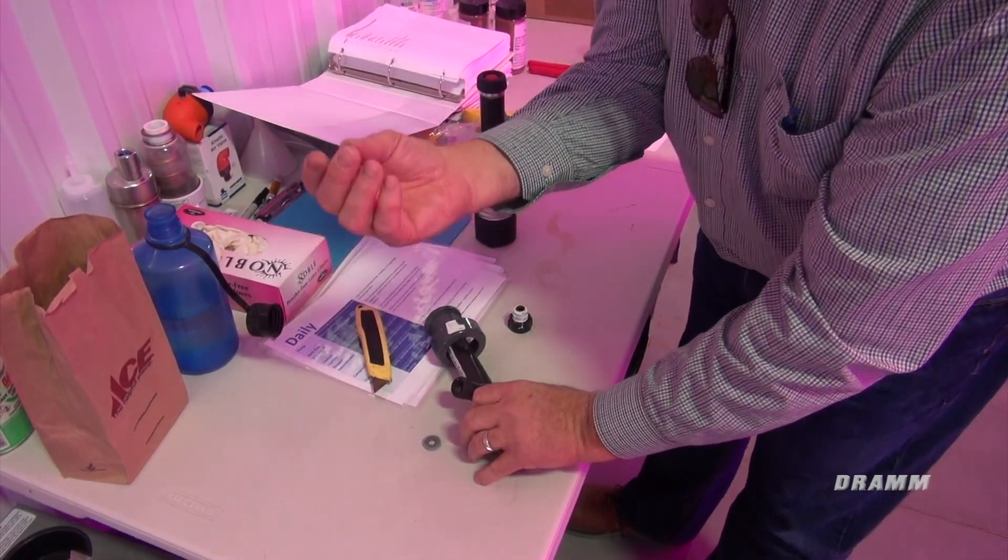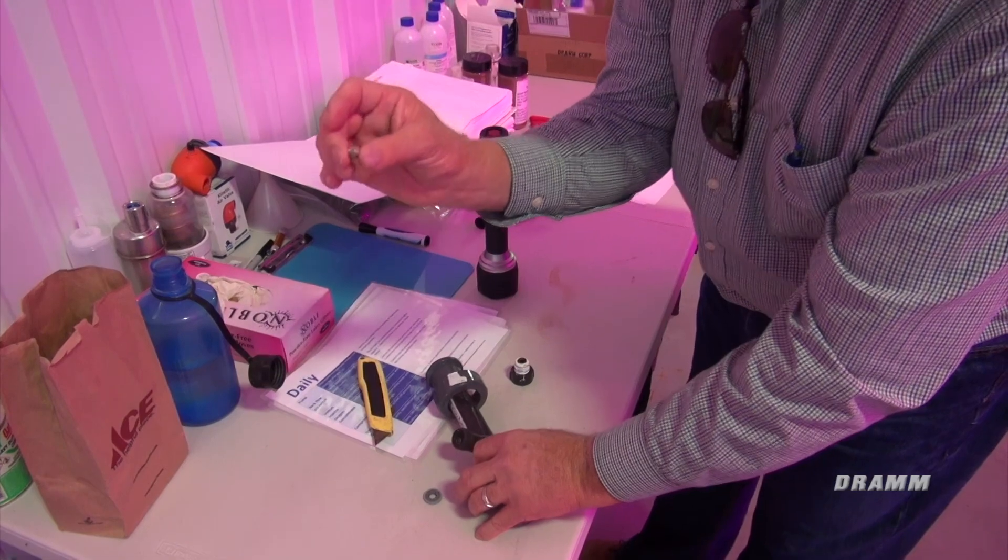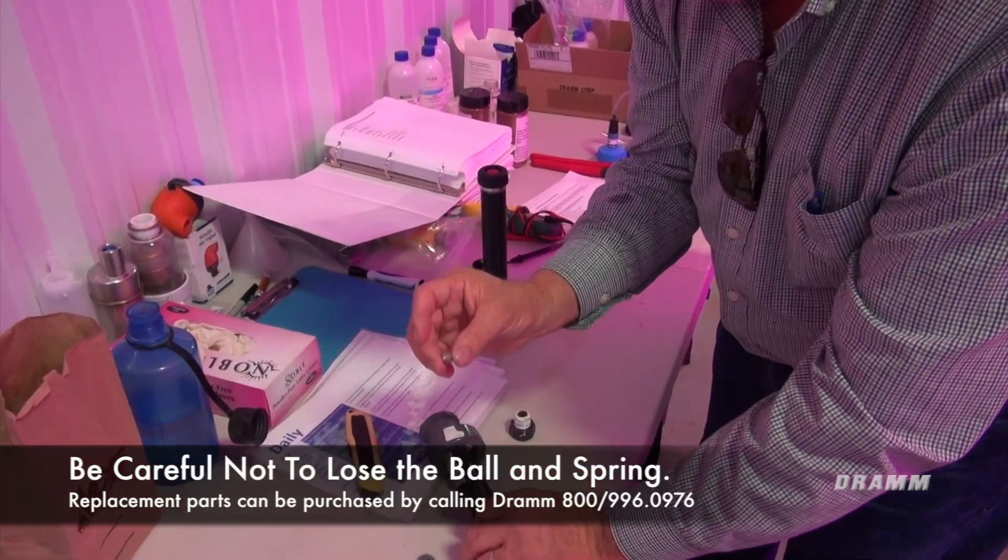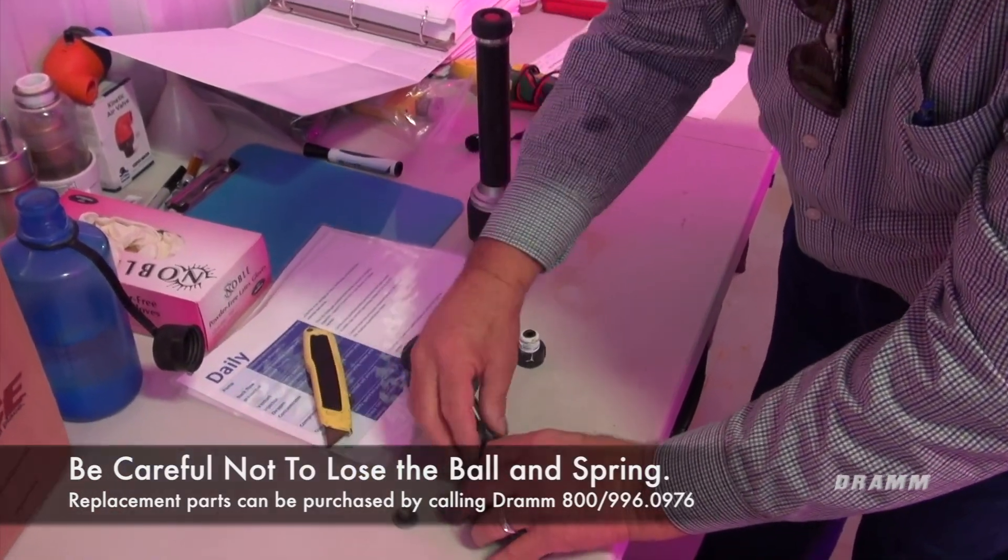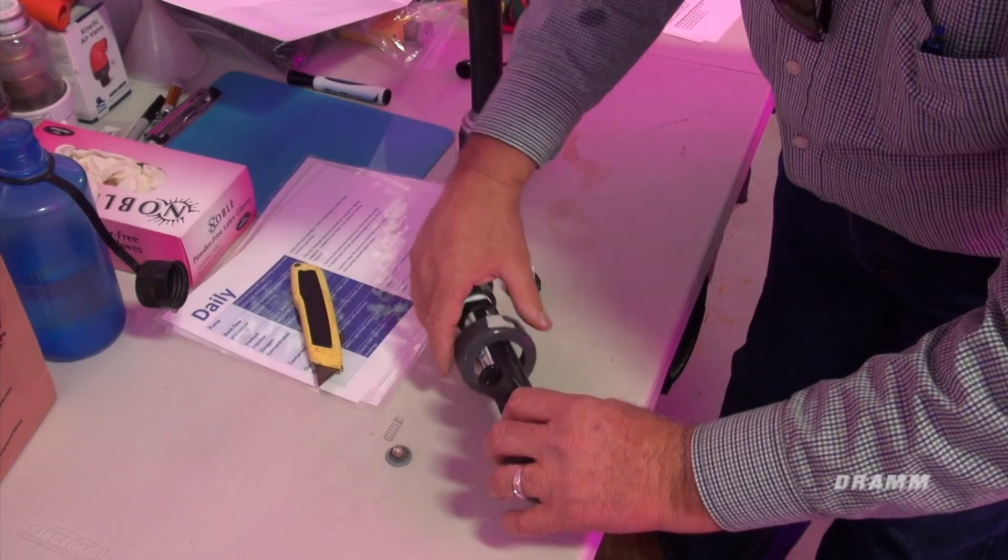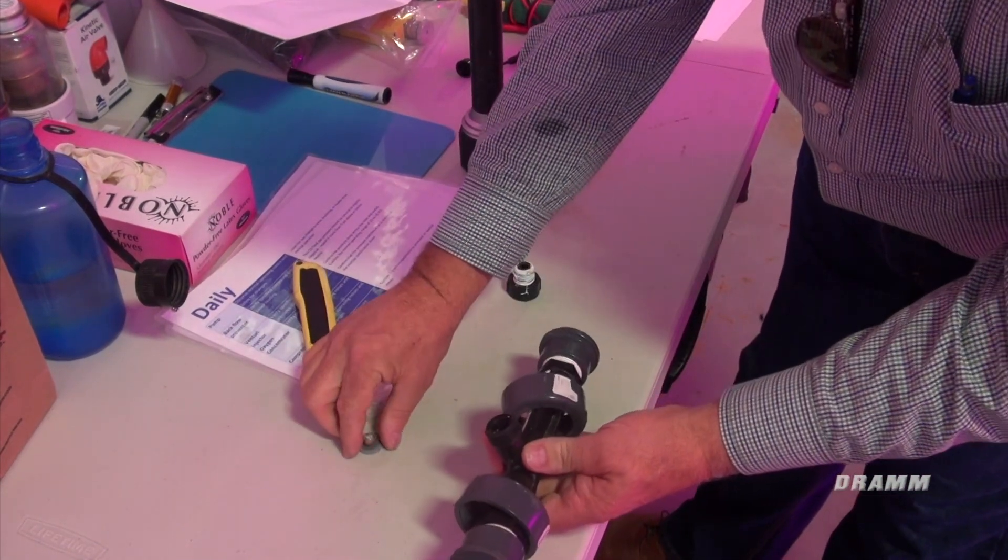And there's a little check ball in here, which is the check valve. Make sure that you don't lose this ball. We have that happen quite often. Drops on the floor. There's a spring assembly in there, and those we just lay aside.